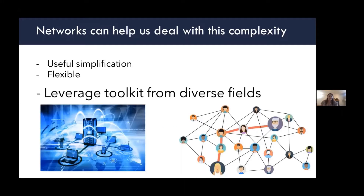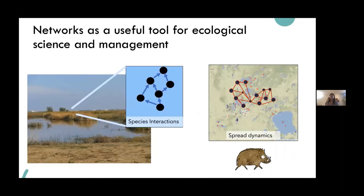Another key thing that networks can do is let us leverage toolkits from diverse fields — from computer science and physics to sociology and social network analysis. There's a wide range of tools available, in some cases off the shelf, that we can port into ecology. The thesis of this talk is that networks are a useful tool for science in ecology as well as management, because many of our systems and processes can lend themselves to network representation.